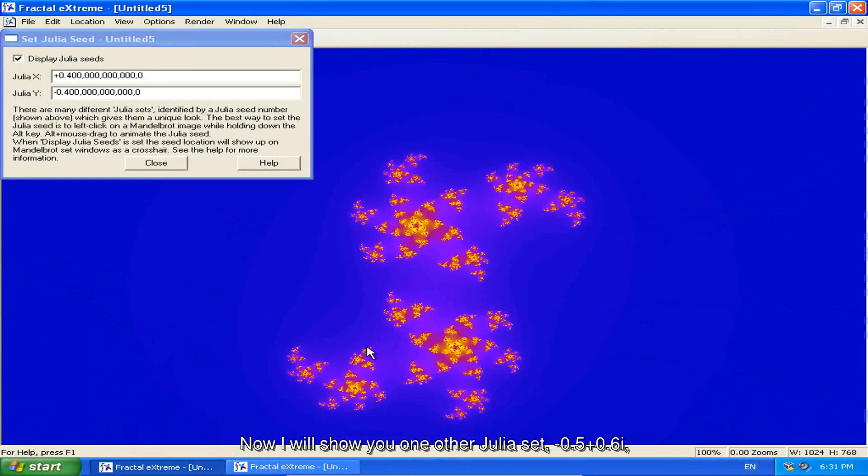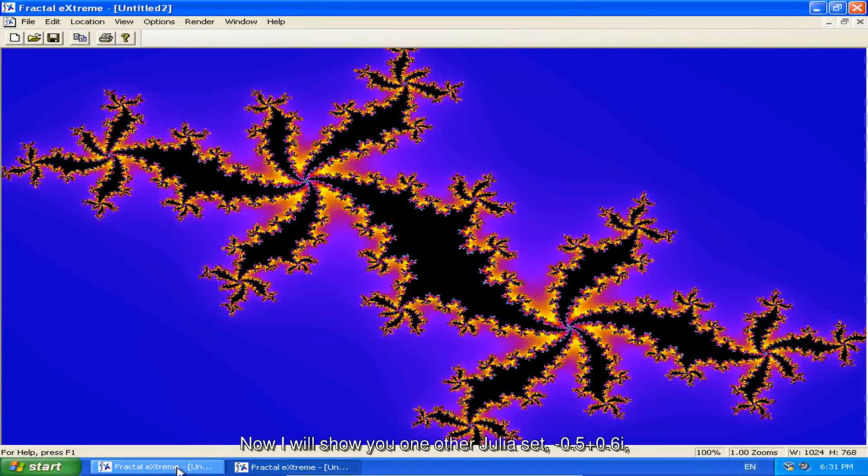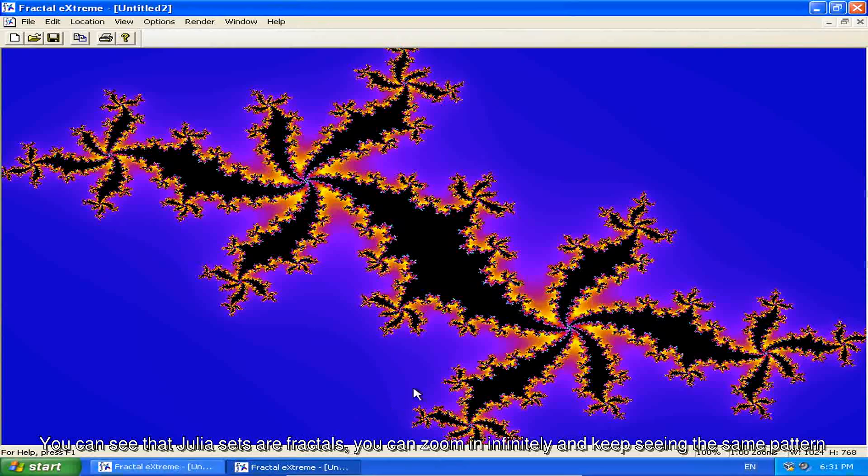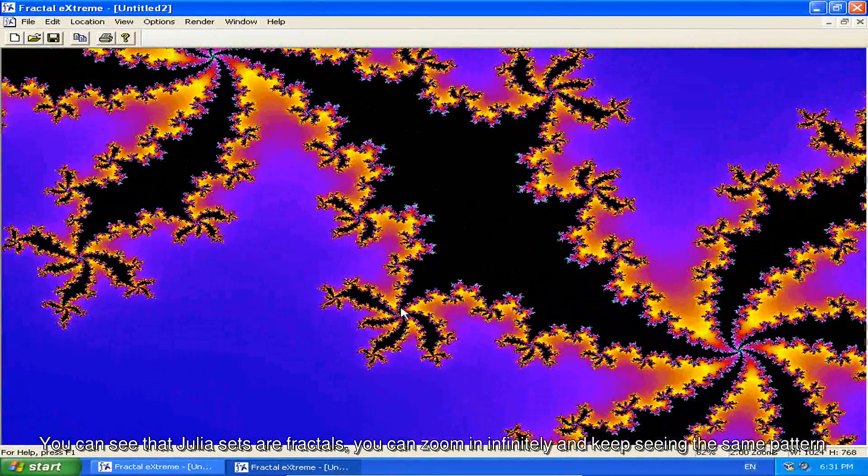Now I'll show you one other Julia set. Mine is 0.5 plus 0.6i. You can see that Julia sets are fractals. You can zoom in infinitely and keep seeing the same pattern.